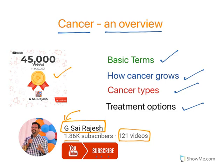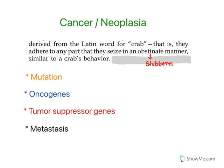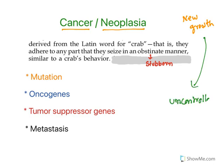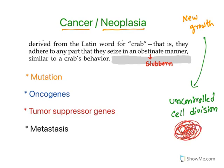Getting into the topic now — cancer is technically known as neoplasia. 'Neo' means new, 'plasia' means growth. In cancer, there is uncontrolled cell division; cells divide continuously without any control. This results in the formation of a tumor mass, where all the cells continue to multiply. This tumor is because of new cell growth, hence it is technically known as neoplasia.